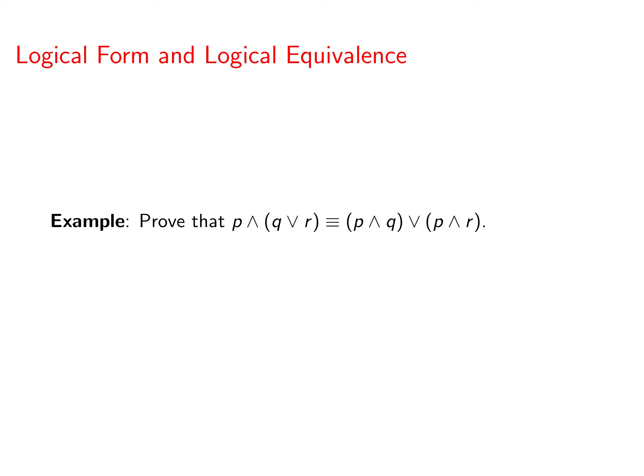Alright, now let's prove that p and, in parentheses, q or r is logically equivalent to p and q or p and r. So what I think you should do now is try to draw a truth table that has all of these pieces in there. Now let me get you started on how to construct your truth table.